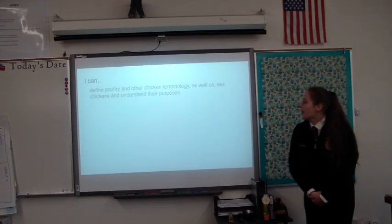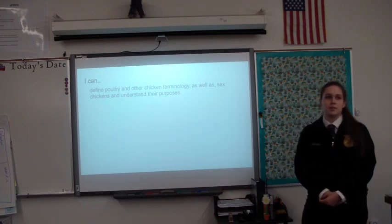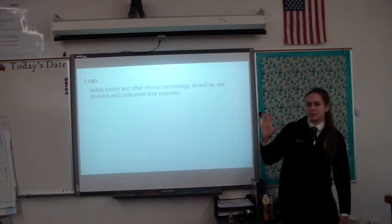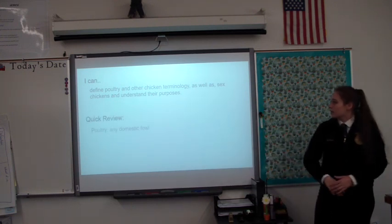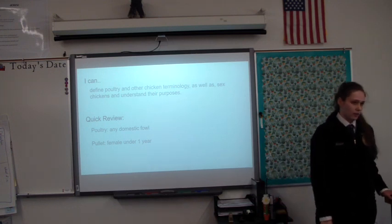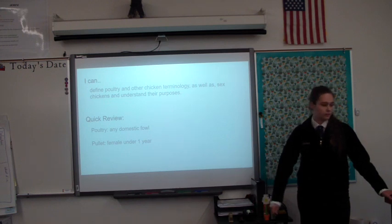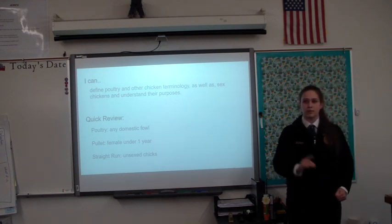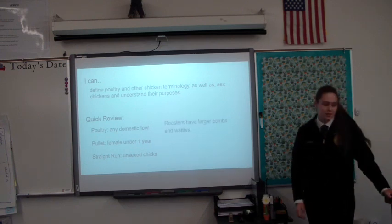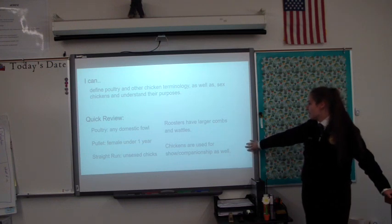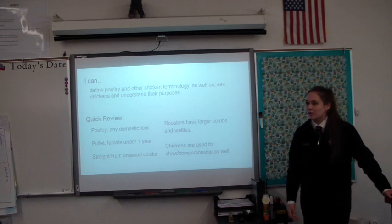Back to our 'I can' statement: I can define poultry and other chicken terminology, as well as sex chickens and understand their purposes. On a scale of one to five, how do you feel about this? Nice to see some of you went up. Quick review: poultry is any domestic fowl. A pullet is a female under one year. Straight runs are unsexed chicks sold together. Roosters have the larger combs and wattles. Chickens are also used for show and companionship. That concludes our presentation.